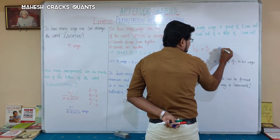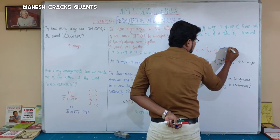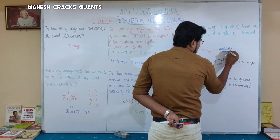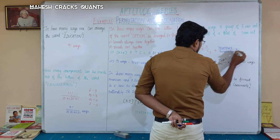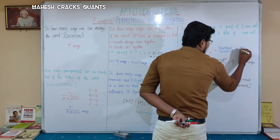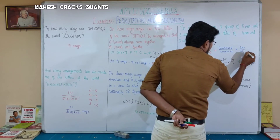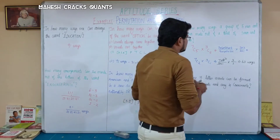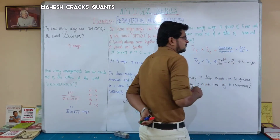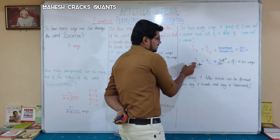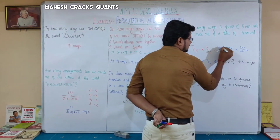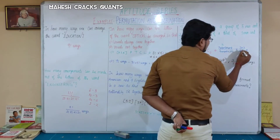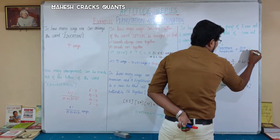To verify: C(7,5) expands as 7 × 6 × 5 × 4 × 3 / (5 × 4 × 3 × 2 × 1), and C(3,2) = 3 × 2 / (2 × 1). Cancelling 5, 4, 3 in numerator and denominator, we get 7 × 3 / 1 = 21 for C(7,5). Then 21 × 3 = 63. Again 63.